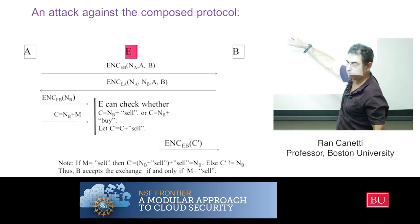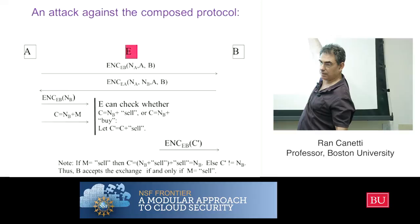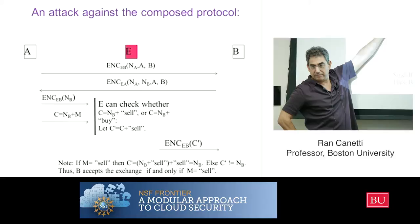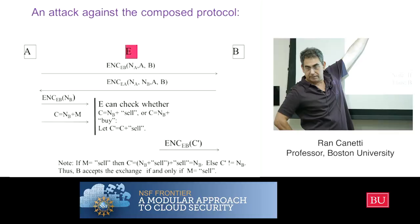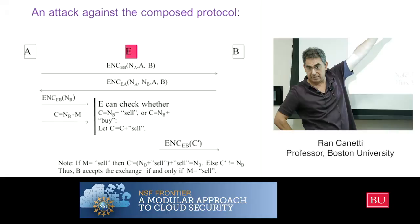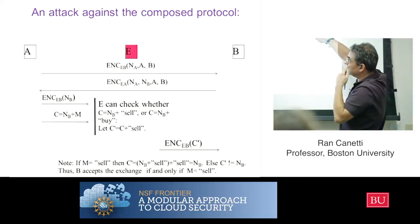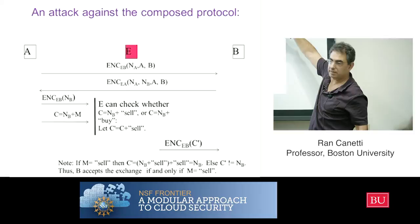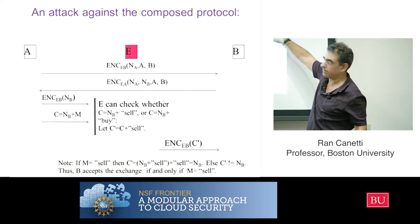He observes whether B is happy — assuming B sends some sort of acknowledgement, or there is some external observable signal indicating whether B finished the protocol. So for each candidate message bi, the attacker computes NB = c XOR bi, encrypts it under B's public key, sends it to B, and observes the response. This gives him a way to test each candidate message.